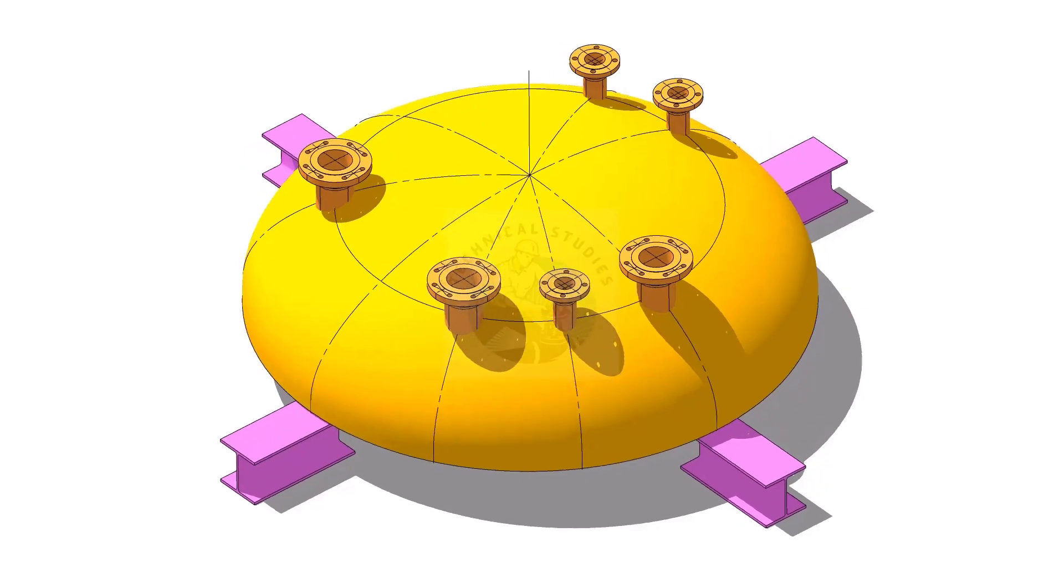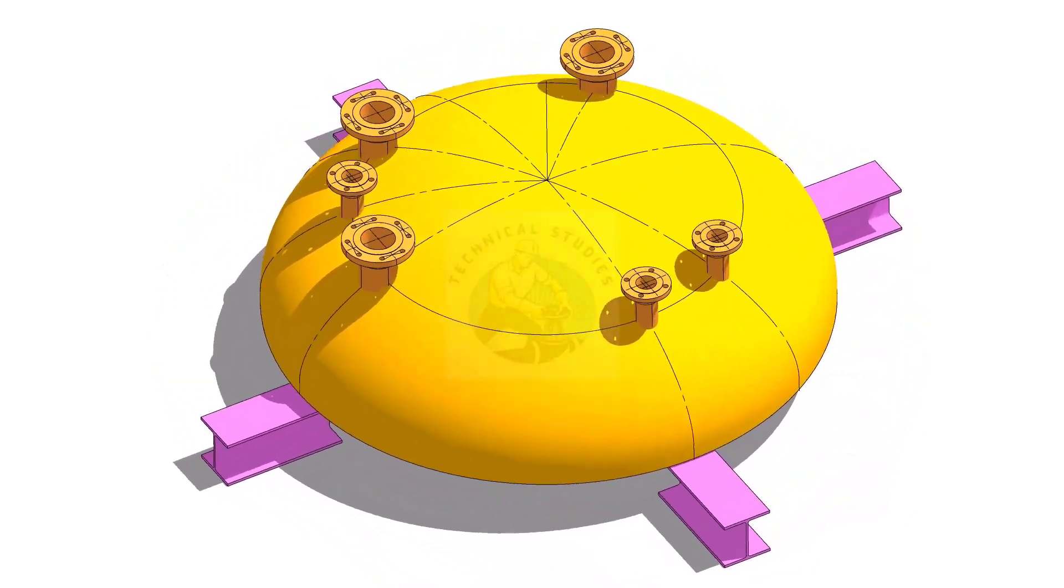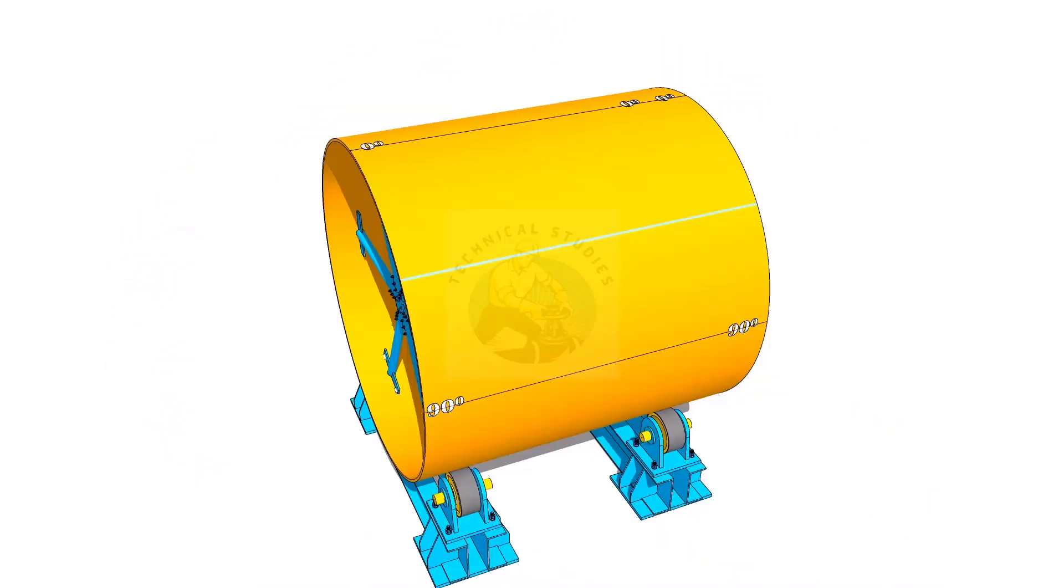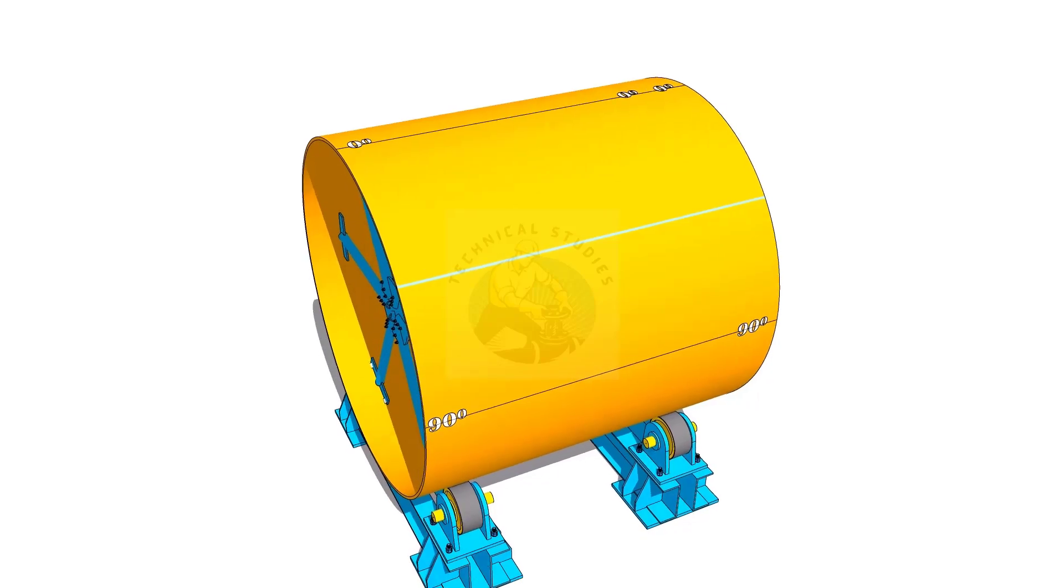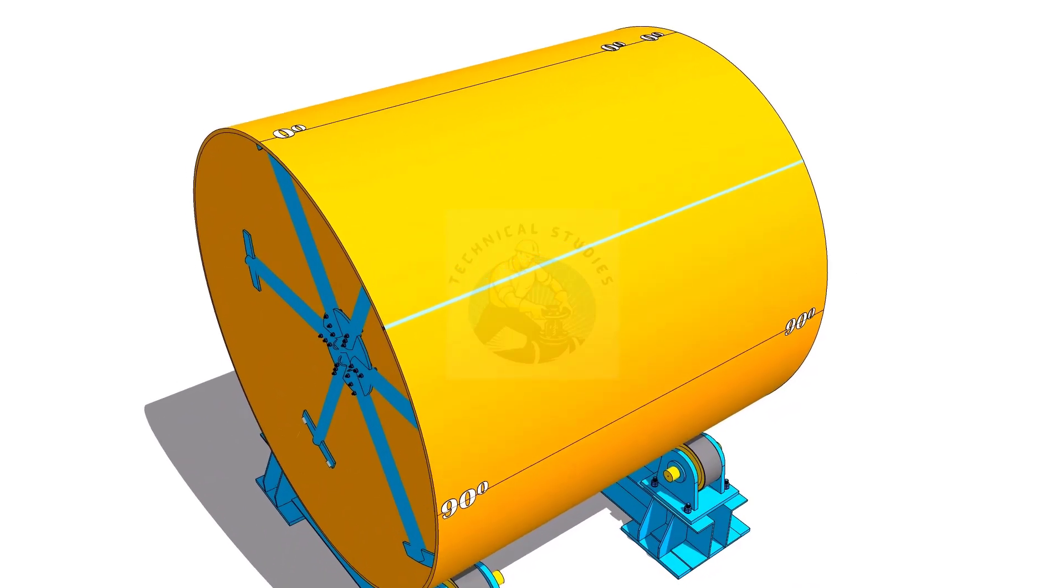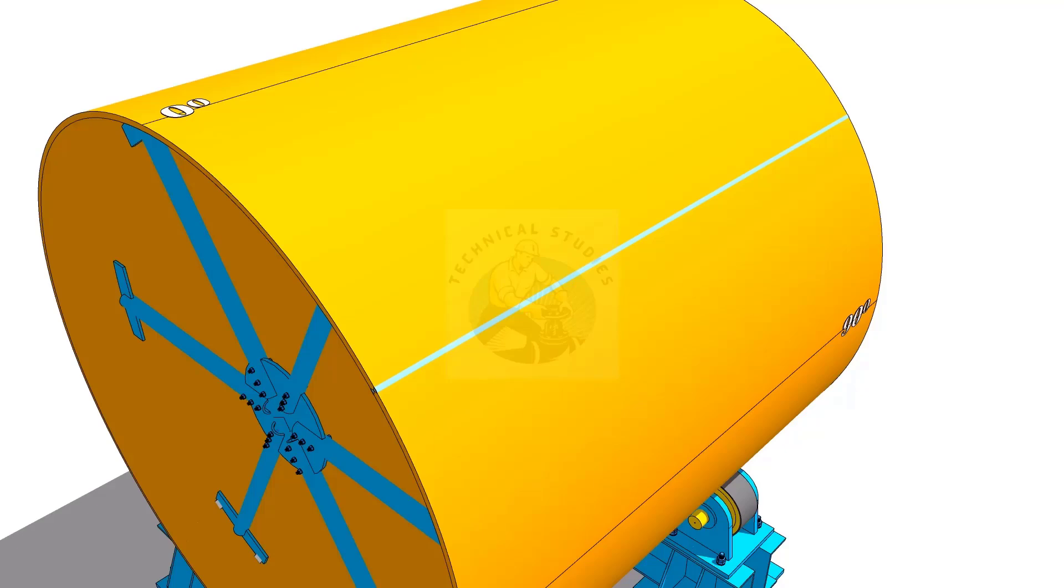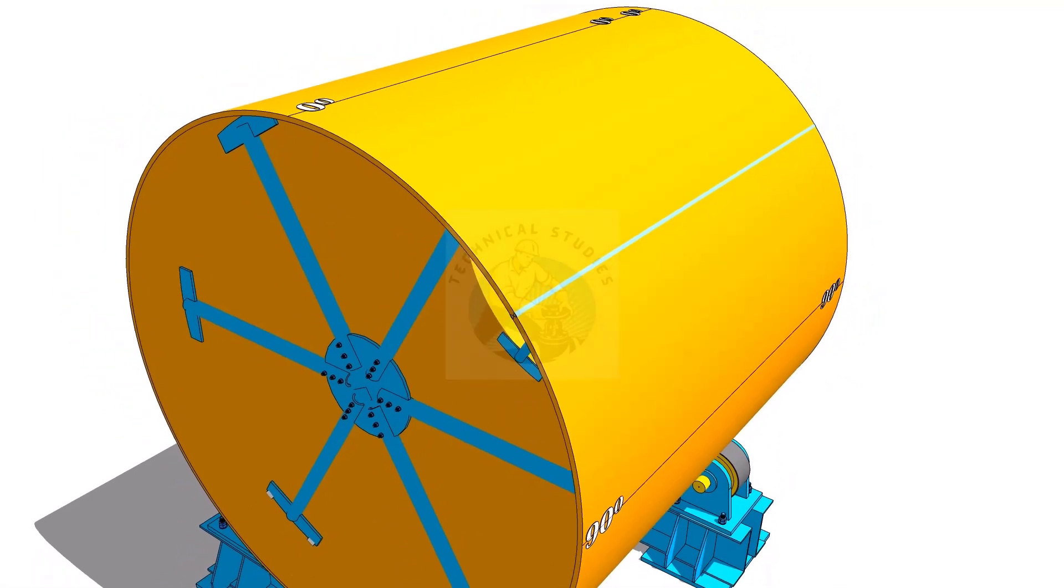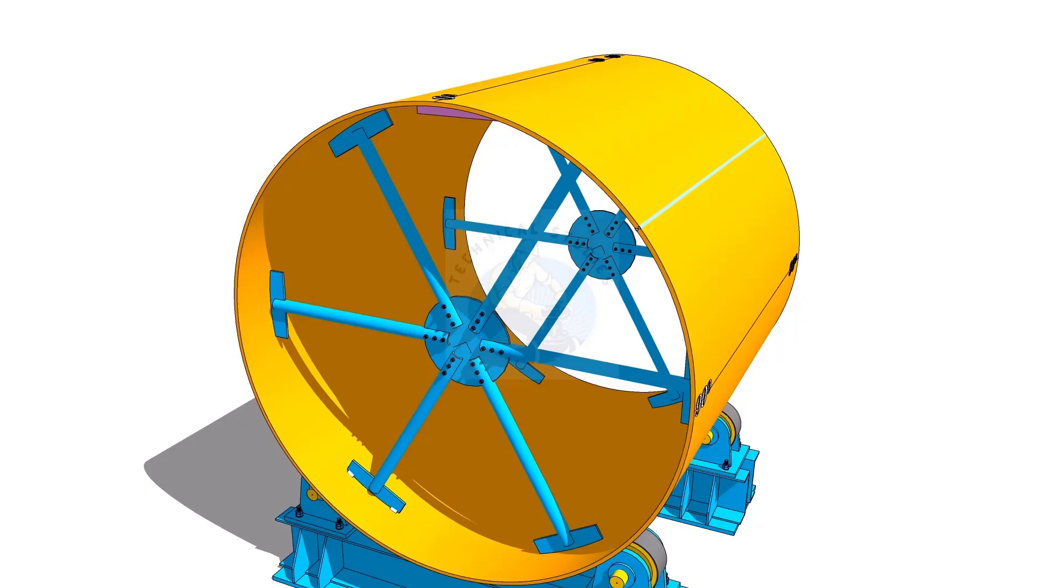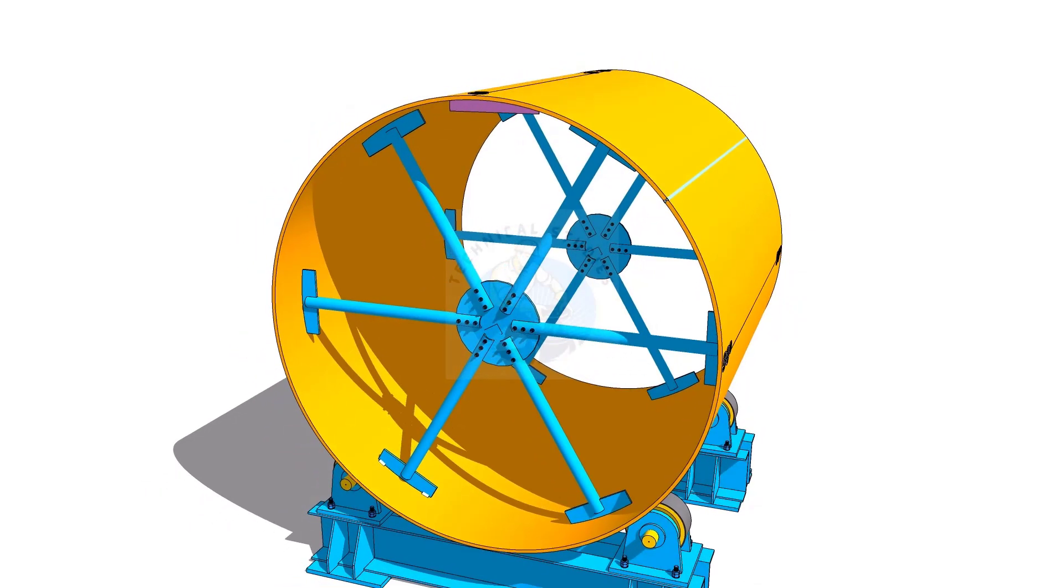Fit up and weld all nozzles on the dish end. After rolling and welding the shells, install spider supports inside the shells to maintain the roundness of the shell.